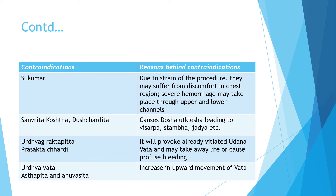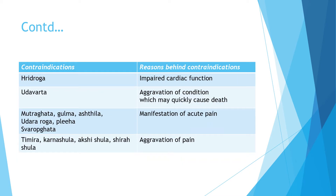In urdhva raktapit and anuvasit, there will be increased pratilom gati of vata, thereby leading to various disorders. In patients having hridhrog, it can lead to impaired cardiac function. It is important to note that hridhrog has been in indications as well — only in patients having good bala and where there is kafaj hridhrog, a mridhu kind of Vaman is to be given. In any other kind of hridhrog, Vaman is contraindicated. In patients having udhavarth, if we take them for Vaman, there can be aggravation of conditions which can quickly lead to death.